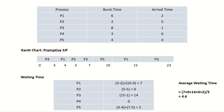This is the Gantt chart prepared for the preemptive SJF. The Gantt chart is the timeline of the CPU and shows the processes which run on the CPU at different intervals of time.